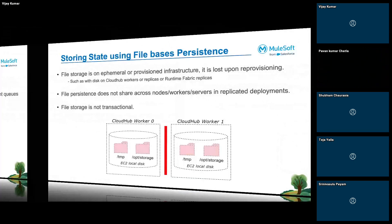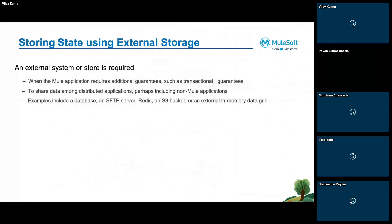There's a question about whether storing state means storing the flow state or variables and payload state. Storing state basically means data — data can be anything: a key-value token, a user array, any payload. It's basically storing a payload in a way that the flow can use or share across for future use cases. A simple example is an access token — you want to store the token in the object store for a certain time period.